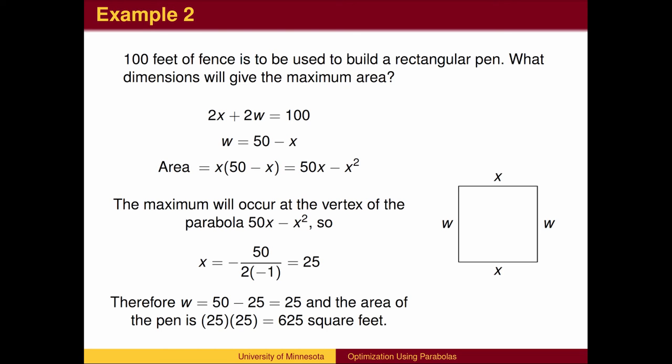The maximum occurs at negative b over 2a, which in this case is when x is 25. The pen should be 25 feet long, and therefore also 25 feet wide. The total area will be 625 square feet.